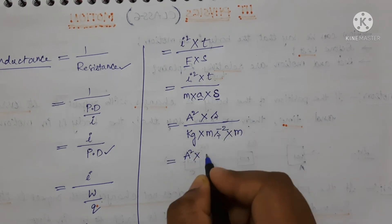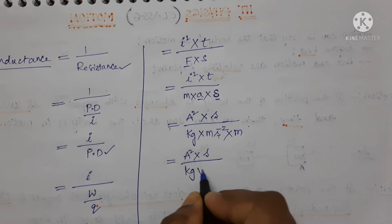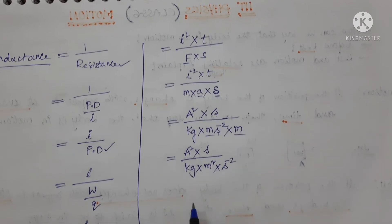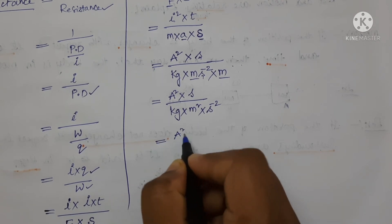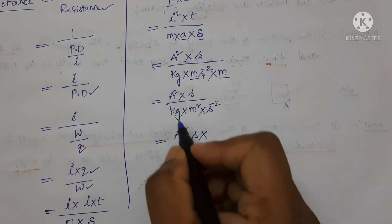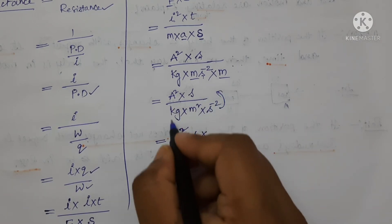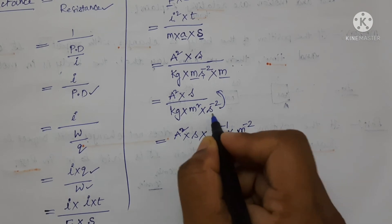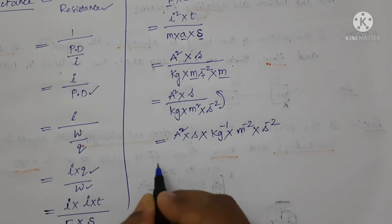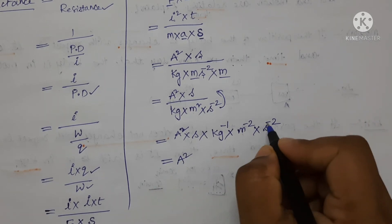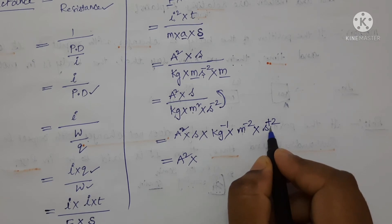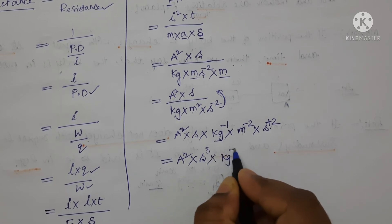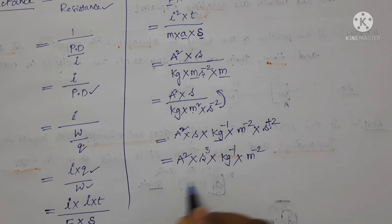So we have A square into second upon kg into meter into meter square into S to the power of minus 2. Now, writing the denominator terms in the numerator: kg power minus 1, meter power minus 2, and S to the power of minus 2. Combined with the numerator, we get A square, and second into S squared gives S to the power of 3 in total. So the result is A squared, S to the power of 3, kg power minus 1, and M power minus 2.